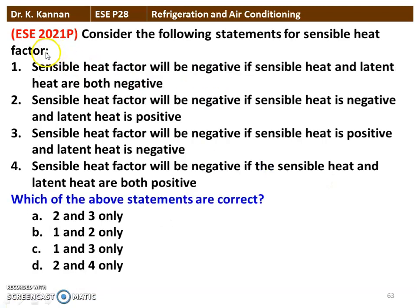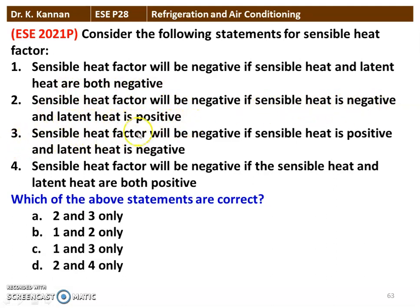The next question from the 2021 question paper: Consider the following statements for sensible heat factor. Statement 1: SHF will be negative if both sensible heat and latent heat are negative. Statement 2: SHF will be negative if sensible heat is negative and latent heat is positive. Statement 3: SHF is negative if sensible heat is positive and latent heat is negative. Statement 4: SHF is negative if both sensible and latent heat are positive.